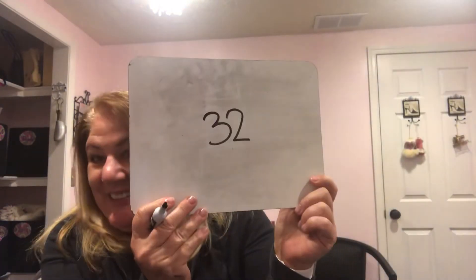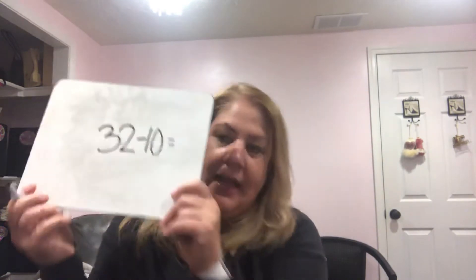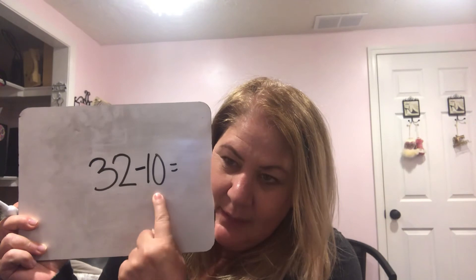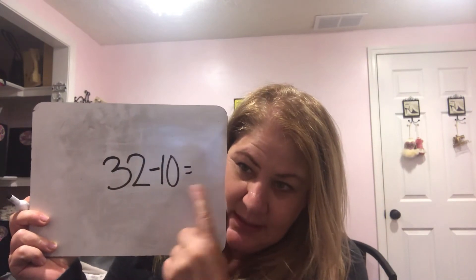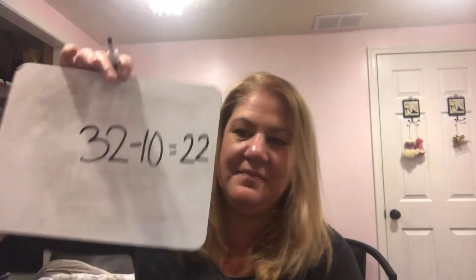Let's try 32. Write down 32, and this time we're going to take away 10 — minus 10 equals what? We have three in the tens place and we're taking away one of them, just taking away one group of 10. Did you get 22? Bet you did — you guys are so smart!